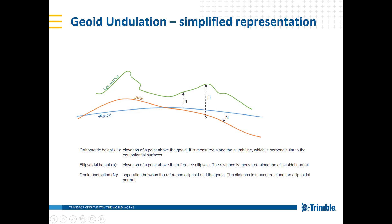If ground control points are not related to a geoid but to the ellipsoid, this should normally be known to the customer or user, because we typically assume they are in relation to the local geoid. Also, the geoid should be named, as there are some general geoids and more detailed geoids in some areas.